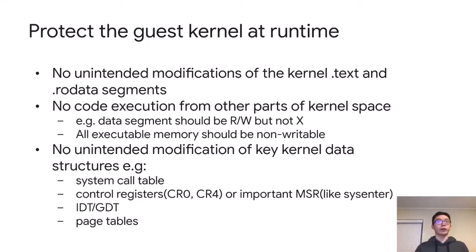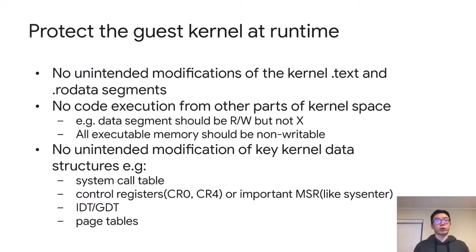So how do we protect the guest kernel based on this threat model? First, we want to make sure there are no unintended modifications on the kernel code segment and read-only data segment — we don't want well-written code replaced by malicious code. Second, we want to make sure there is no code execution from other parts of the kernel space. Data segments should always be read and write but not executable, blocking buffer overflow attacks.